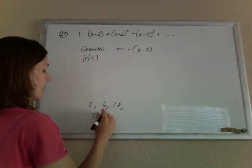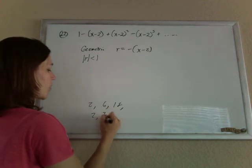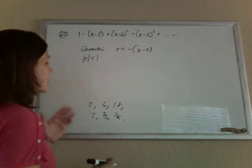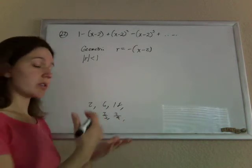But if it's dividing by 3, getting smaller and smaller, then we have a chance. And actually, for a geometric, we know it's going to converge.